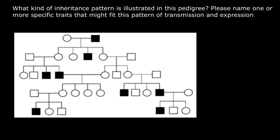We have some peculiarities here. For example, here only males are affected. This couple has children, both females and males. Females are not affected, but when they form a family, they also have children of both sexes, but only males are affected with this genetic disorder.